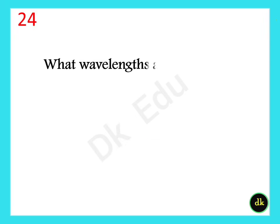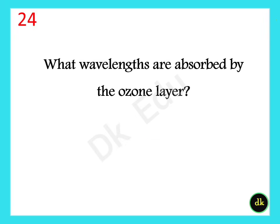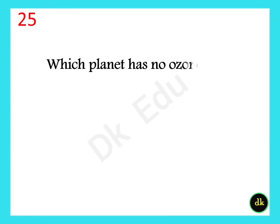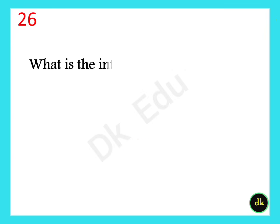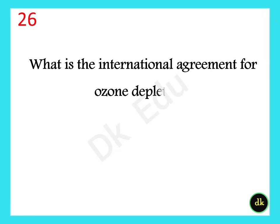What wavelengths are absorbed by the ozone layer? 200 to 310 nanometres. Which planet has no ozone layer? Mars. What is the international agreement for ozone depletion? The Montreal Protocol.